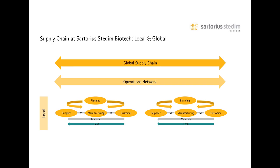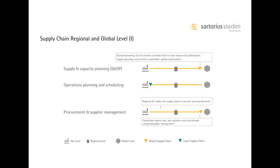The supply chain is organized with two entities: global supply chain and local supply chain. The local supply chain is in charge of the end-to-end supply chain of each manufacturing site or operation site. All our manufacturing plants represent our operation network. Global supply chain is in charge to coordinate and optimize the flow of materials through the network and the best balancing of workload across the different manufacturing sites. Some activities are specific to the global supply chain and some to the local one.